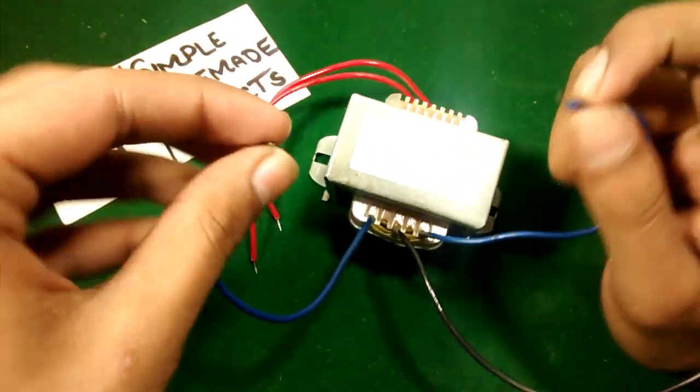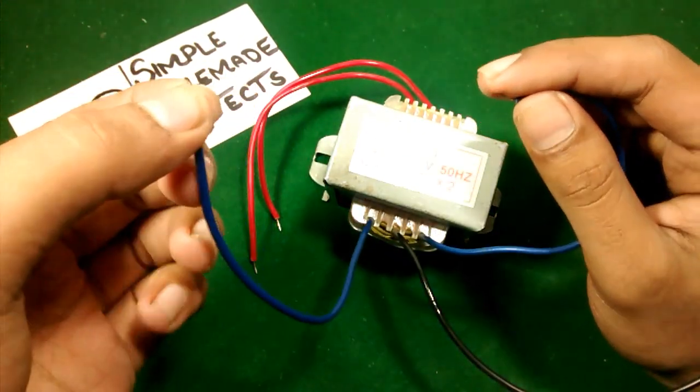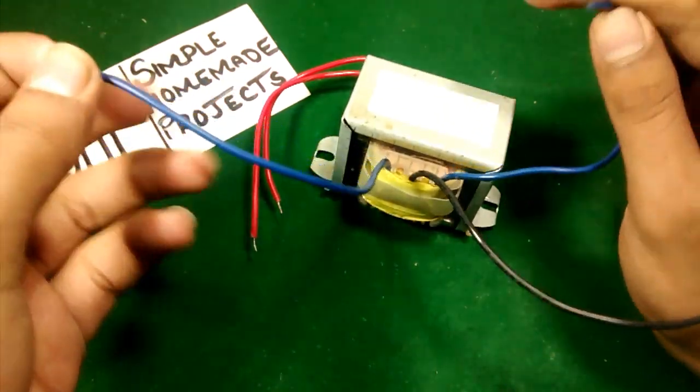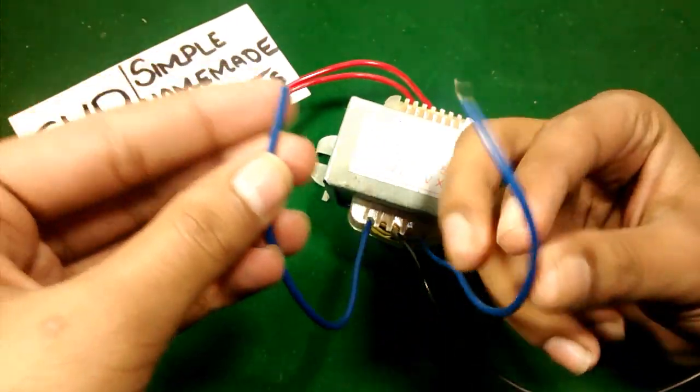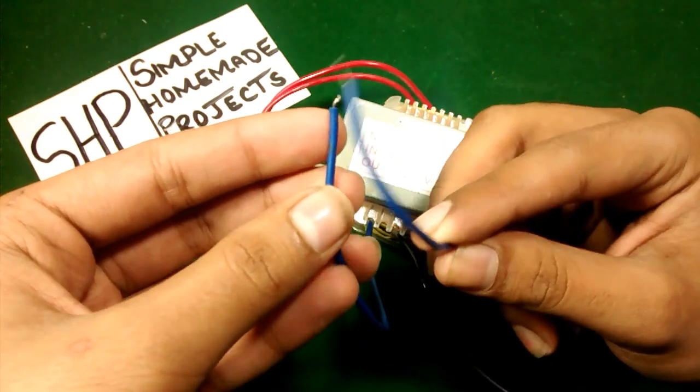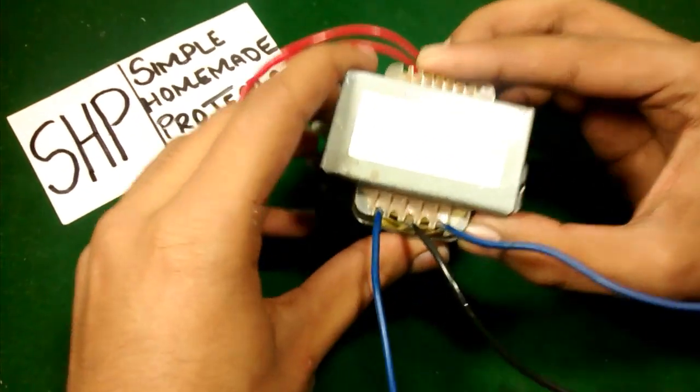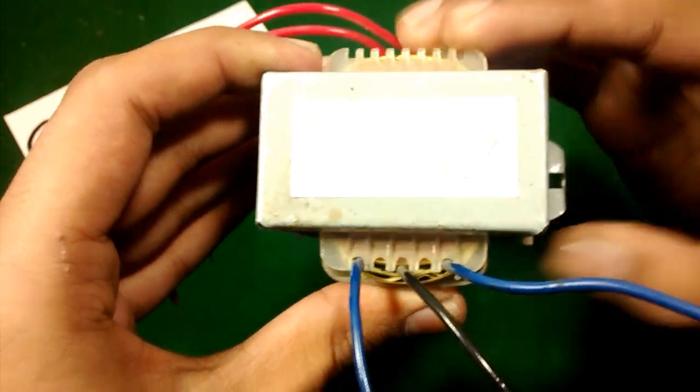Then use a bridge rectifier if you want to use the DC voltage, and then you will obtain 24 volts DC. I hope that you will understand. Please share my video and subscribe to my channel.